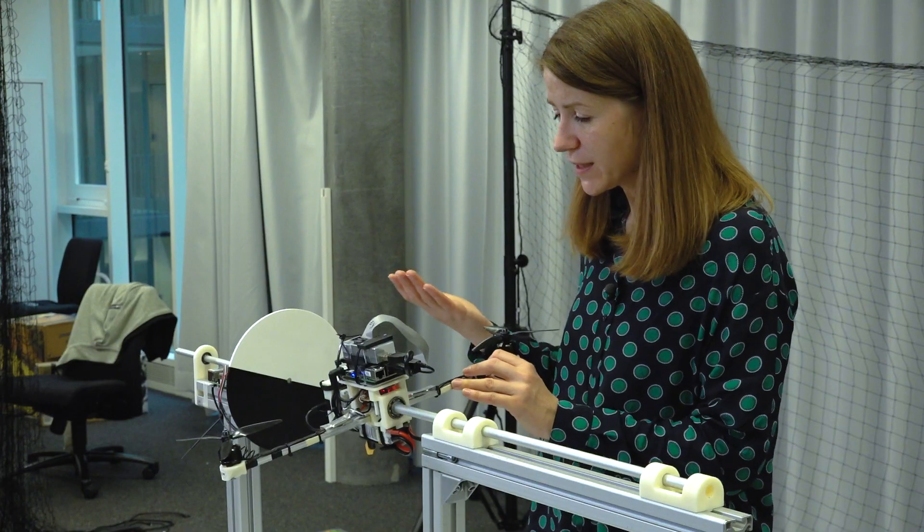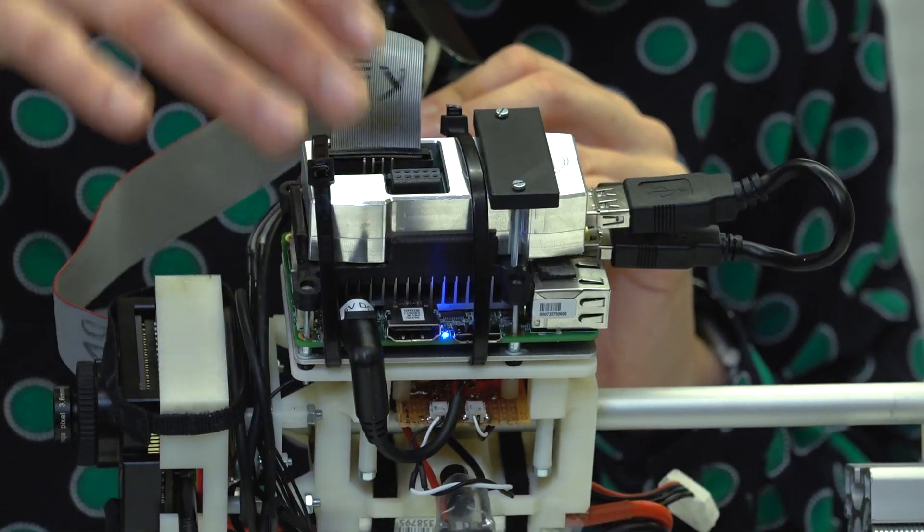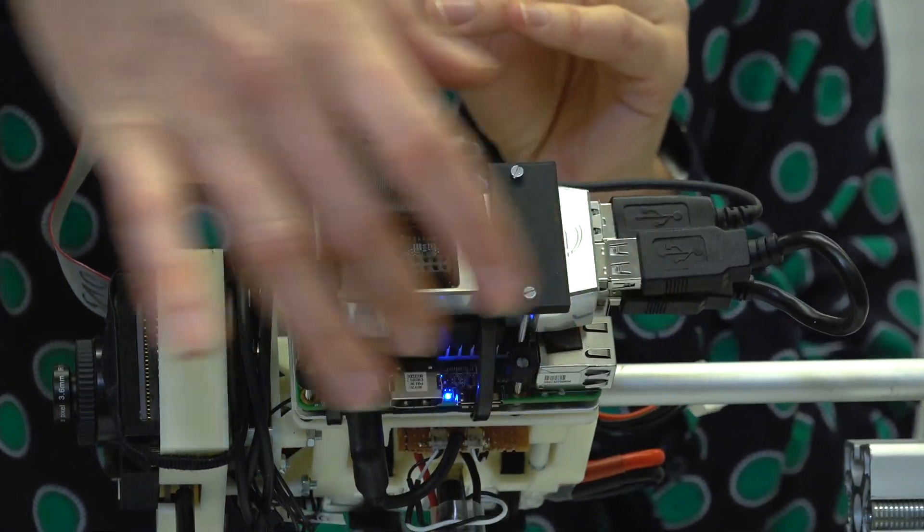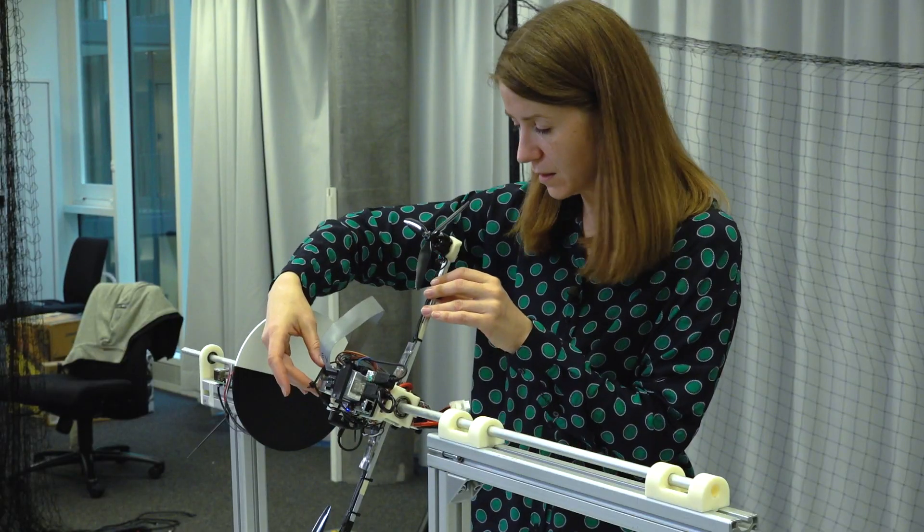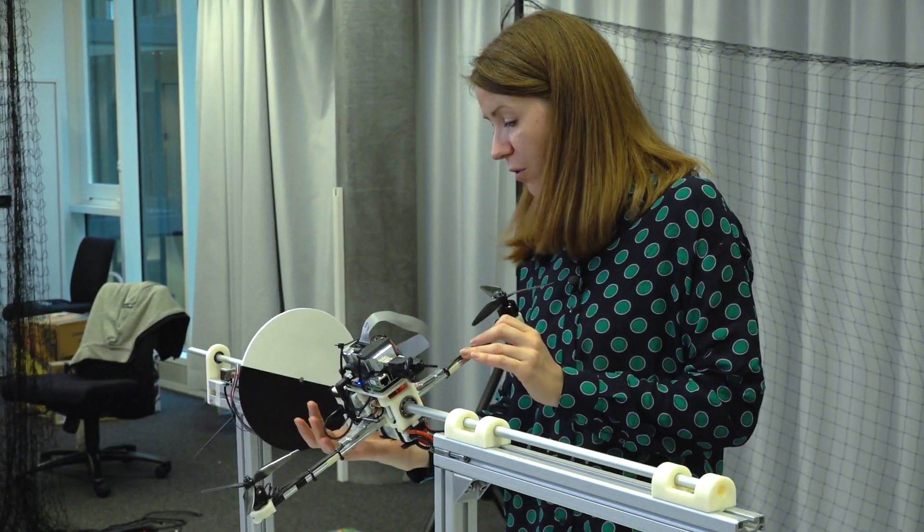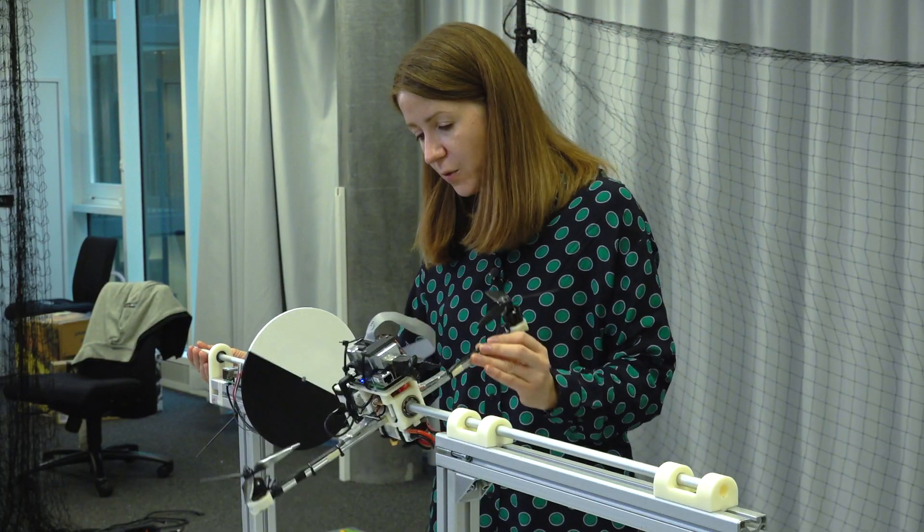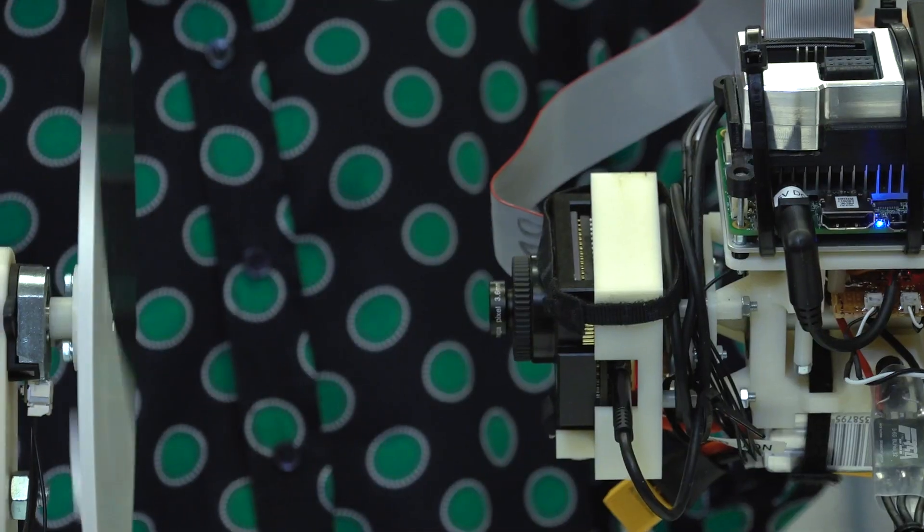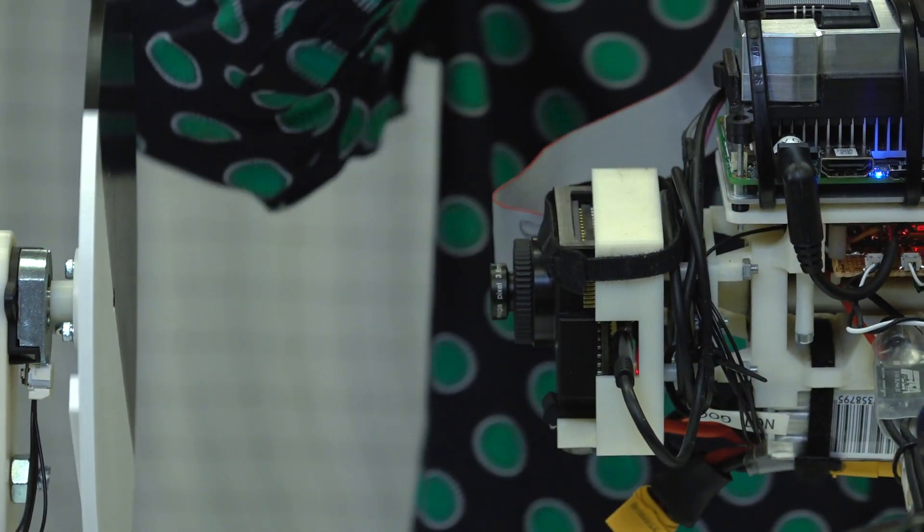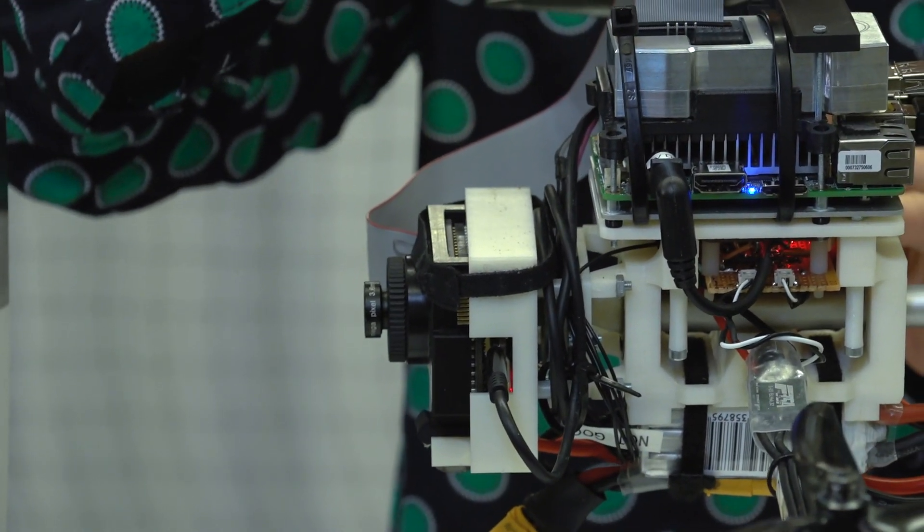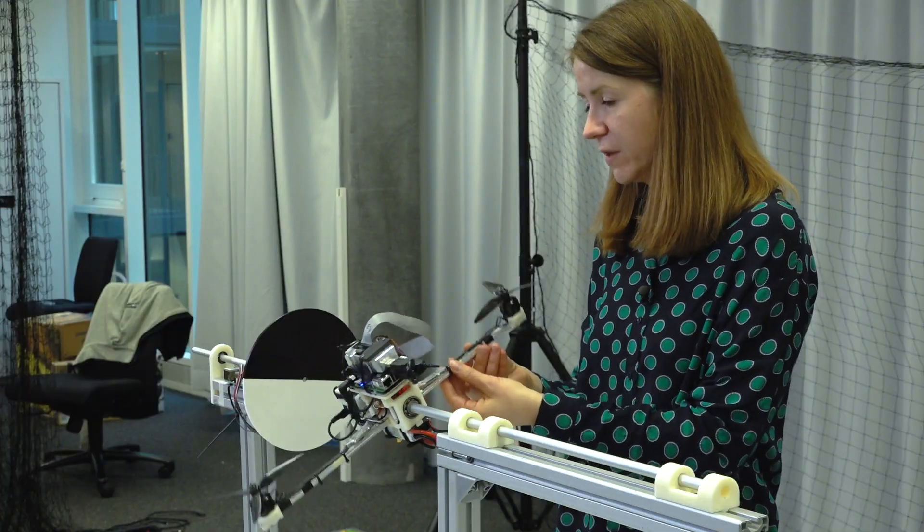In our prototype system we interface the neuromorphic chip Loihi, which is here in this form of this USB stick, to the neuromorphic camera, event-based camera dynamic vision sensor. The vision sensor can observe this pattern rotating very quickly, and the motor control processing will happen on Loihi before it's interfaced to the rest of the drone plant.